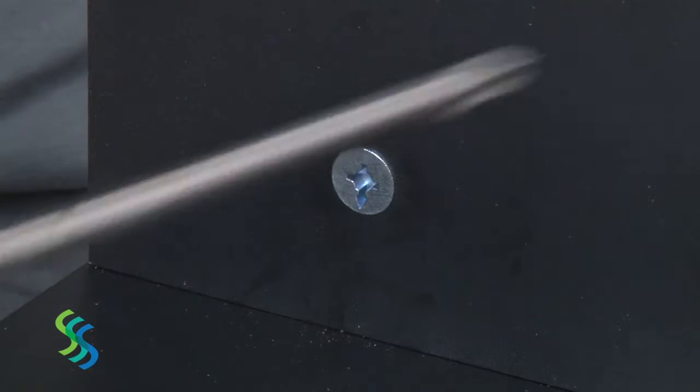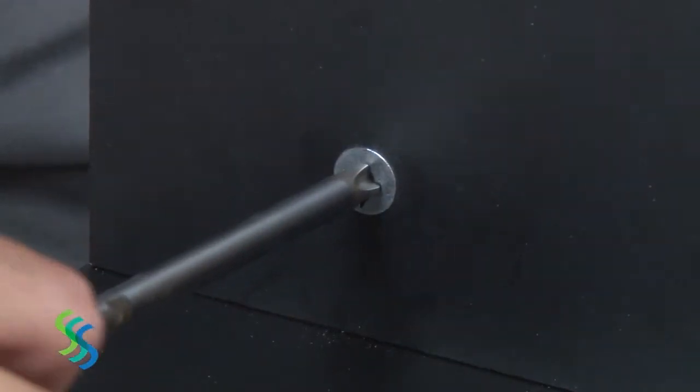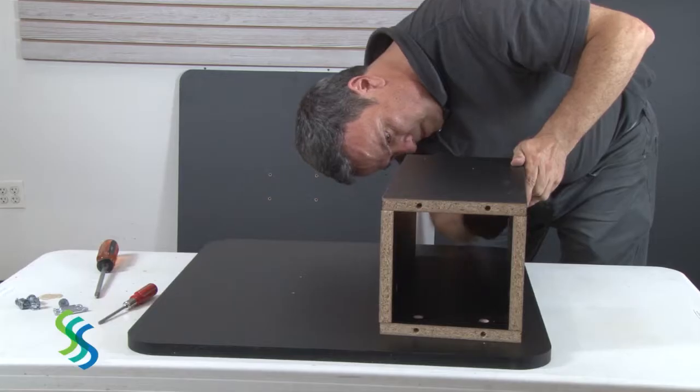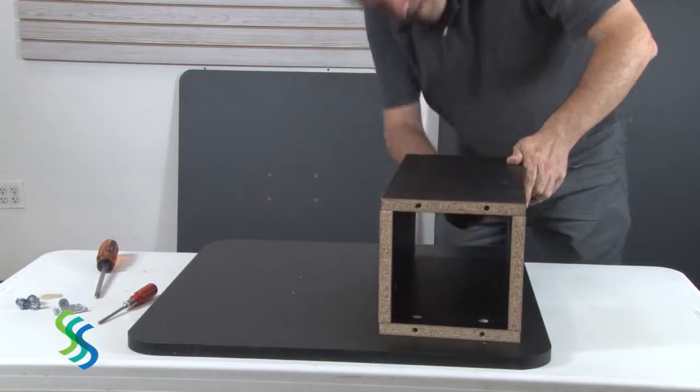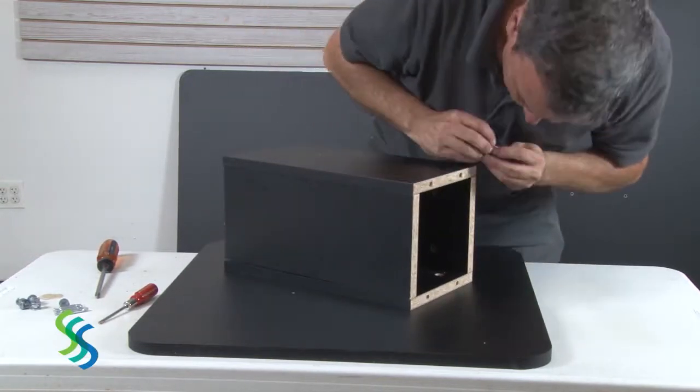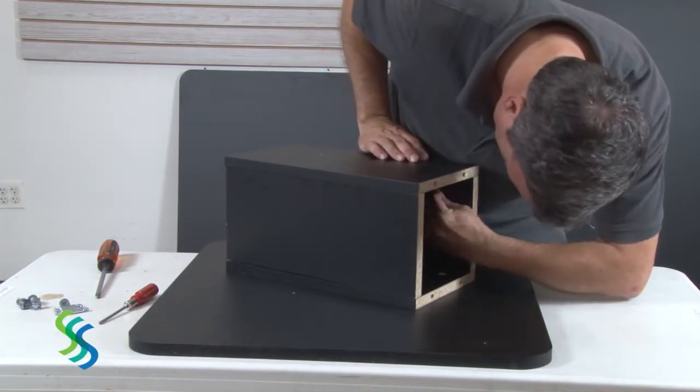This groove indicates which side of the cam lock opens and it should point toward the screw as the cam lock is being inserted. The cam lock can be pushed into place with your fingers but should be tightened with a screwdriver.